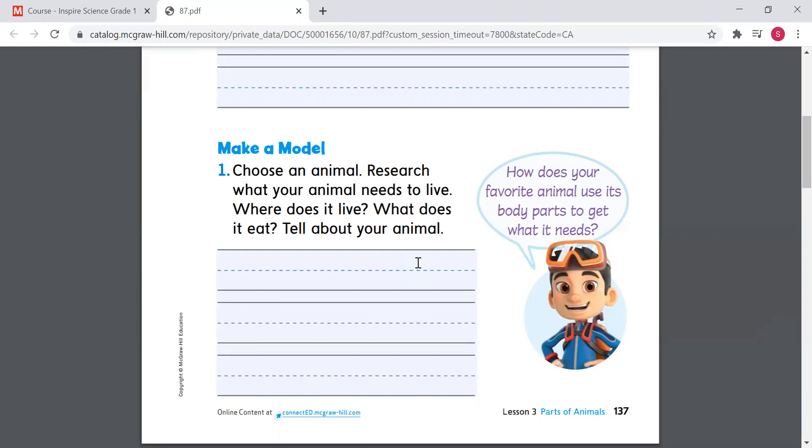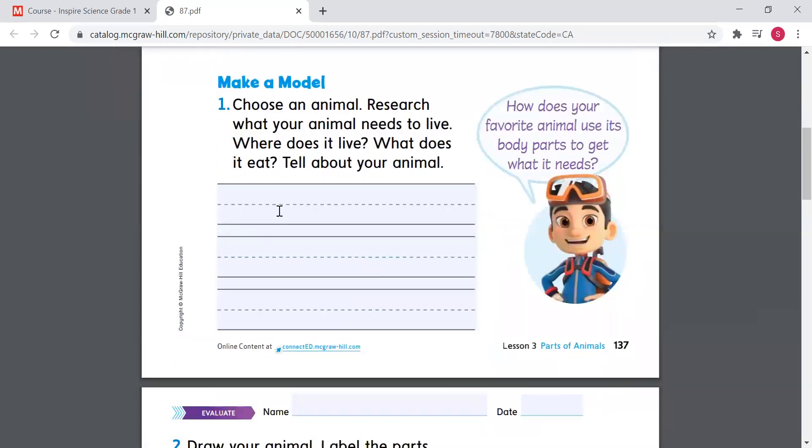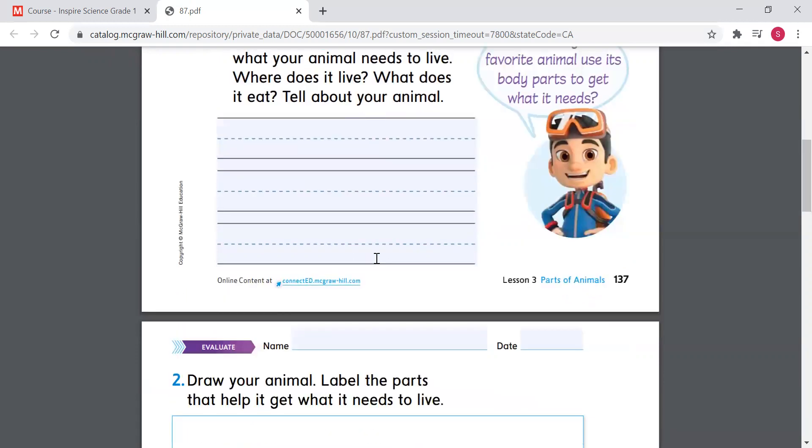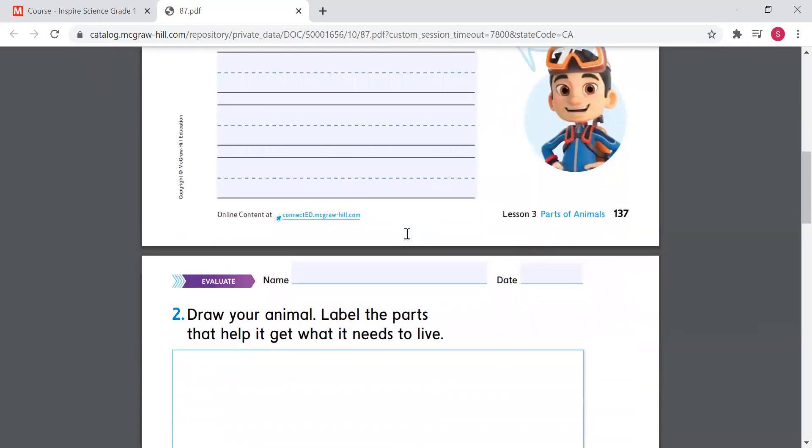For example, I will be talking about dolphins, but you can talk about giraffe, you can talk about camels, you can talk about cats, dogs, cows, sheep, anything. But when you talk about it, you're gonna say where they live. So where does this animal live? What does it eat? And you tell us about your animal. So for example, I will be talking about a dolphin. So dolphin lives in the ocean. And he eats fish. And of course they breathe air.